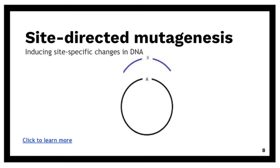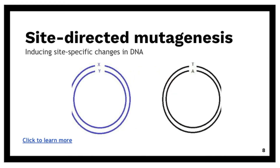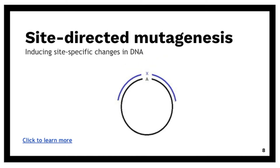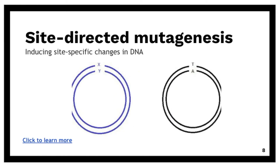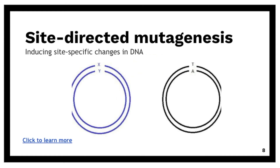We also have site-directed mutagenesis. This type of mutagenesis induces site-specific changes in DNA — it's a method to create specific or targeted changes in our plasmid DNA. We might want to do this to study changes in protein activity, to select or screen for specific mutations at the DNA or RNA level, or to introduce or remove certain tags.